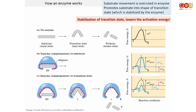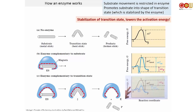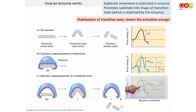It turns out most enzymes work by binding to the transition state — they work to stabilize the transition state. What you do is stabilize the transition state such that you lower the energy barrier between the substrate and the transition state. The drop in energy from the uncatalyzed transition state to the catalyzed transition state provides the rate enhancement.